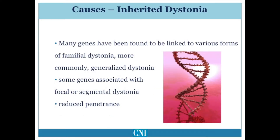There have been a large number of genes found to cause various forms of familial dystonia. In the majority of cases, the dystonia tends to have onset in childhood or early adulthood, and typically many members of these families develop generalized dystonia.